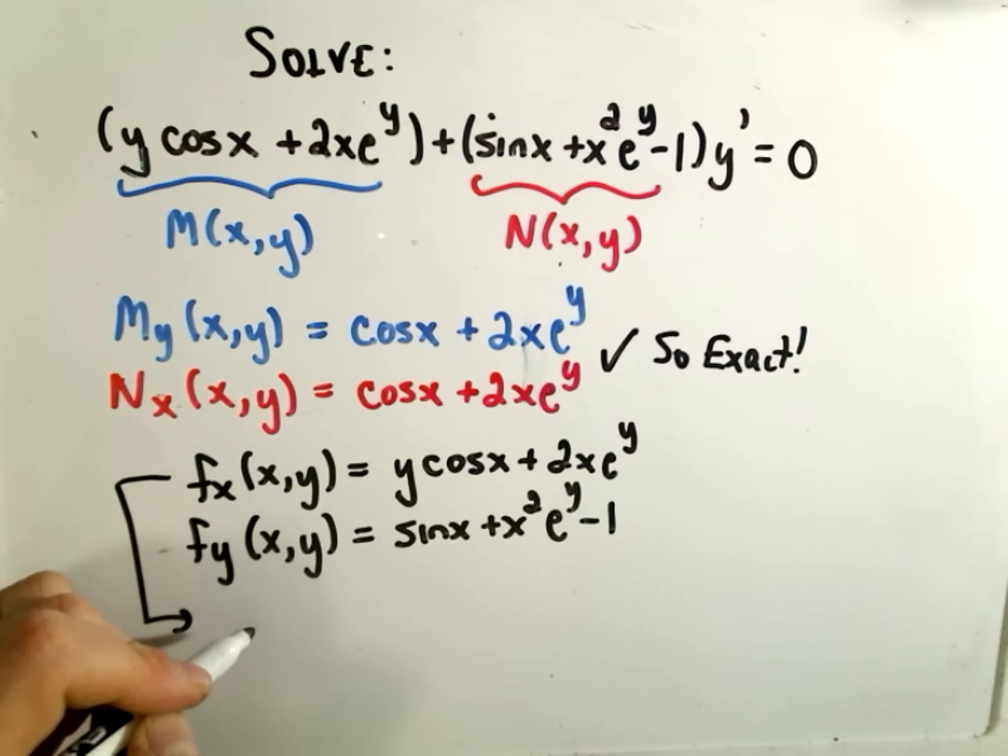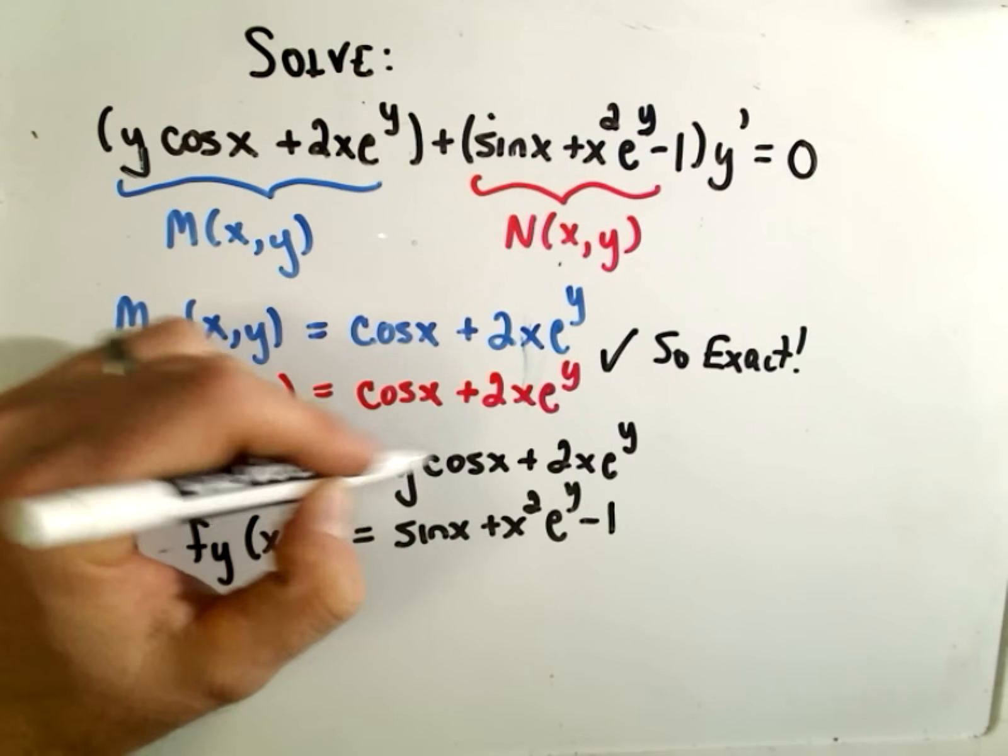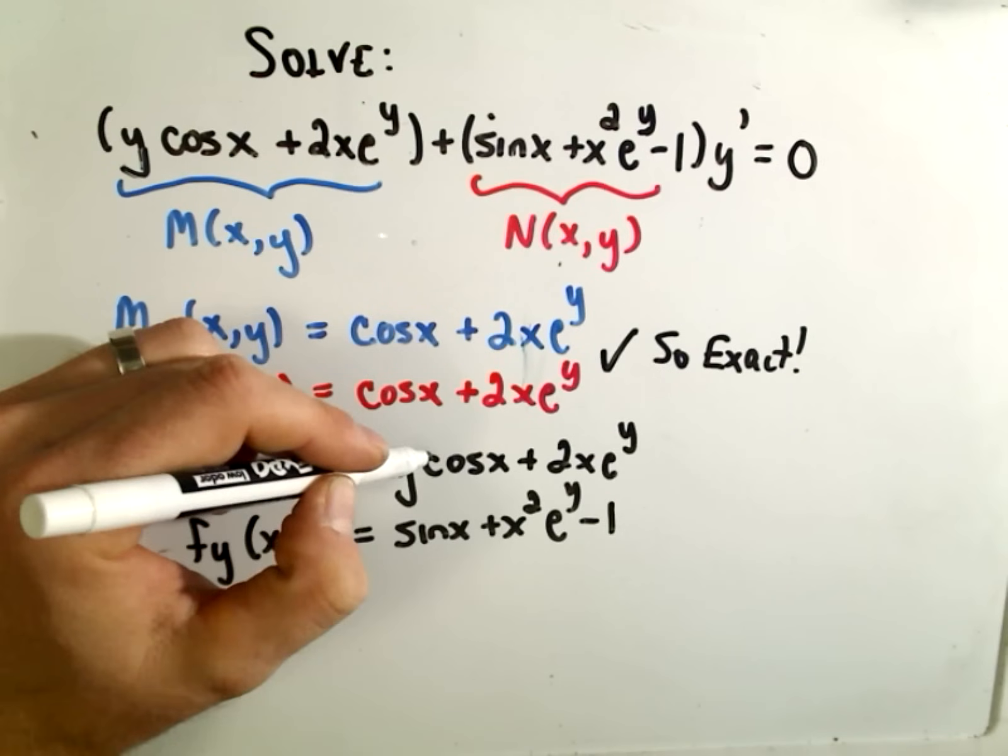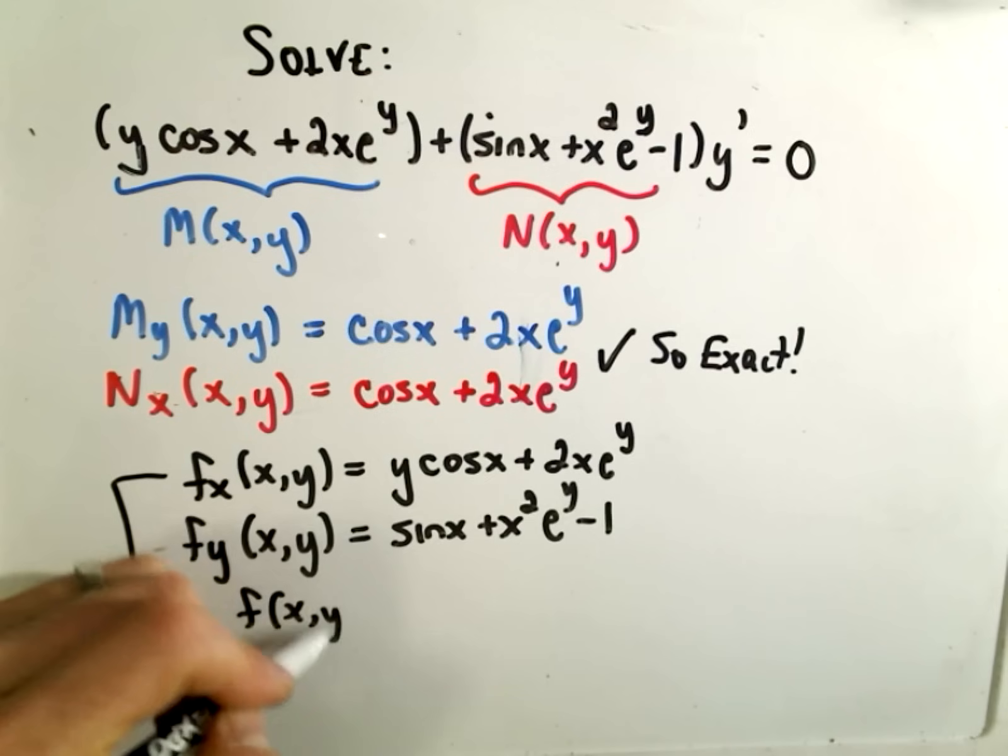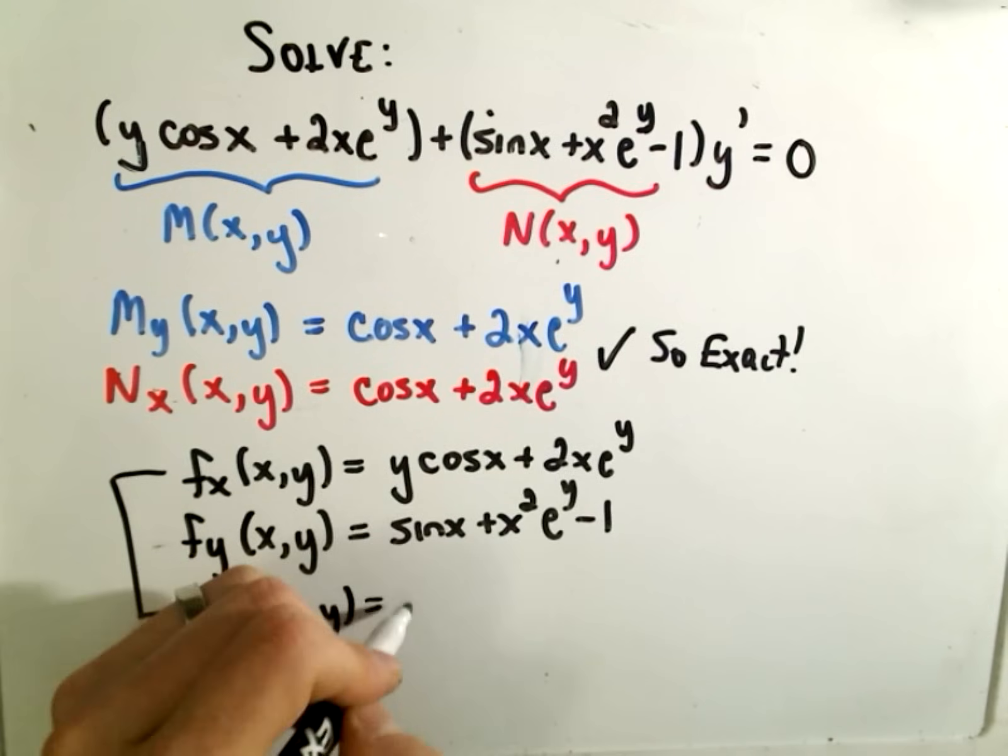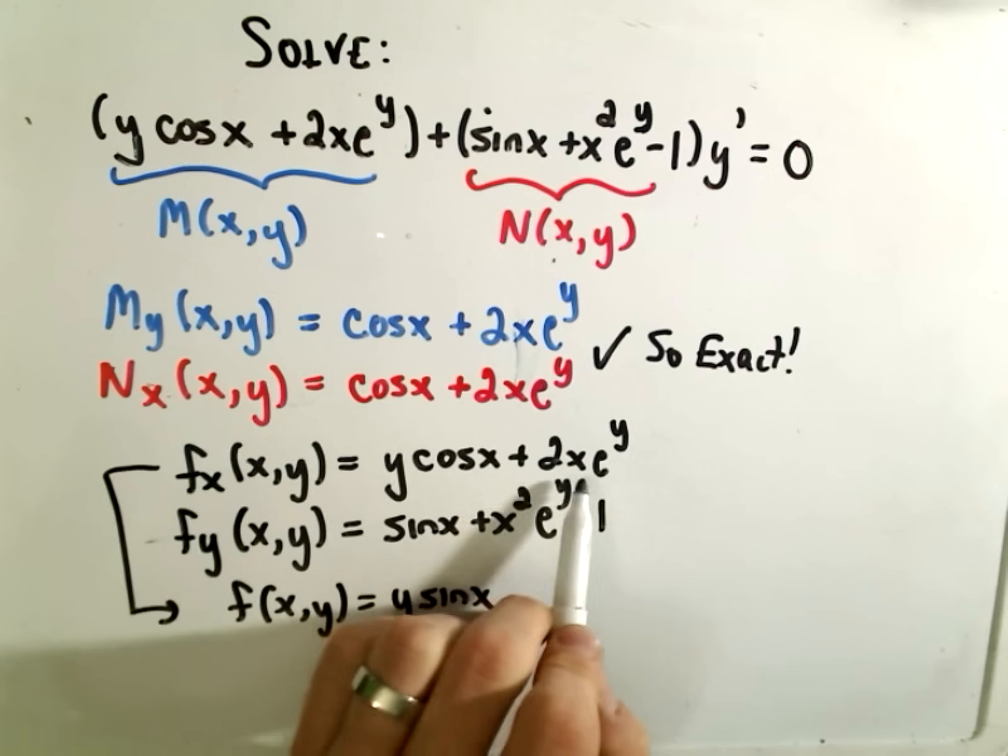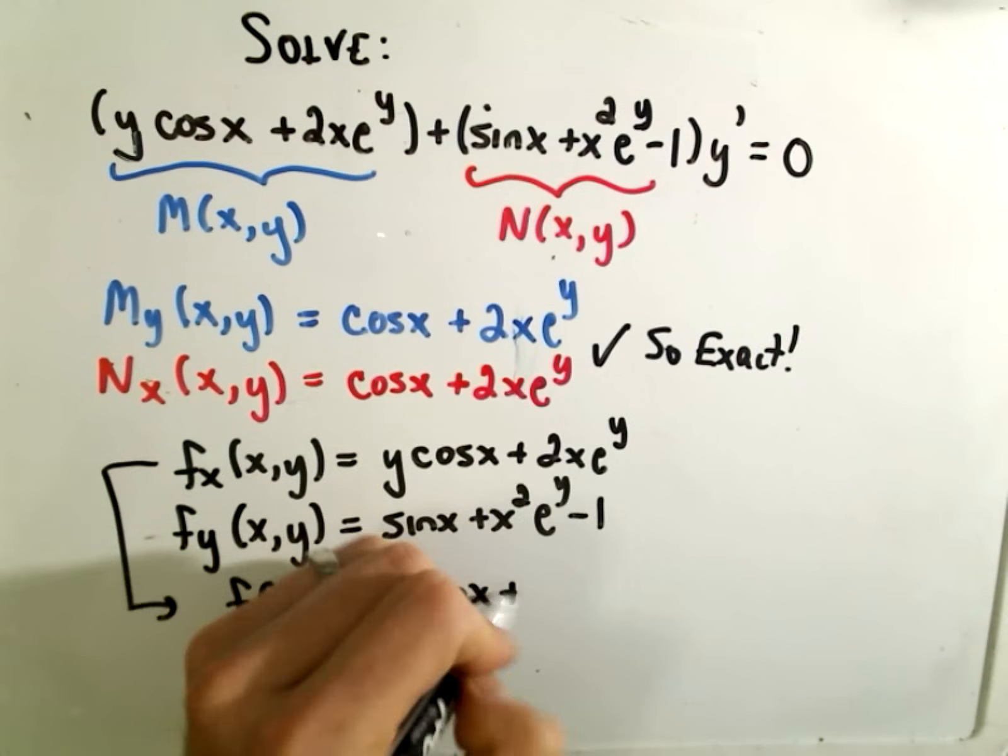so if we take this first function and integrate it with respect to x, we'll get simply, so if we integrate, excuse me, again with respect to x, so we're integrating cosine, so the f function, the f of x, y, we'll simply get y times sine of x. If we integrate 2x, we'll get x squared.